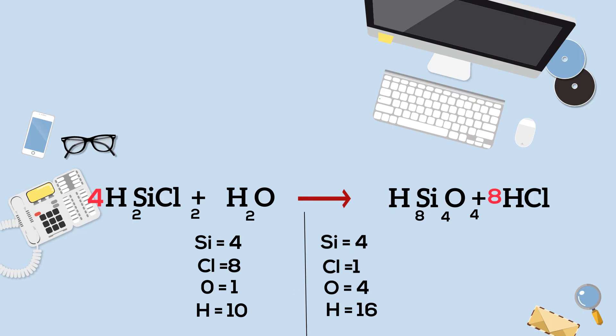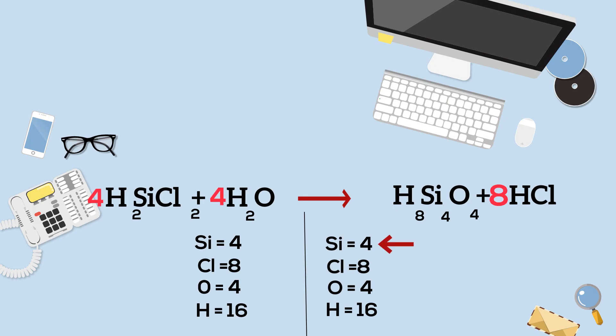And so right now I have four on the product side, and only have one on the reactant. So in order to get these in balance, I can multiply H2O by four.